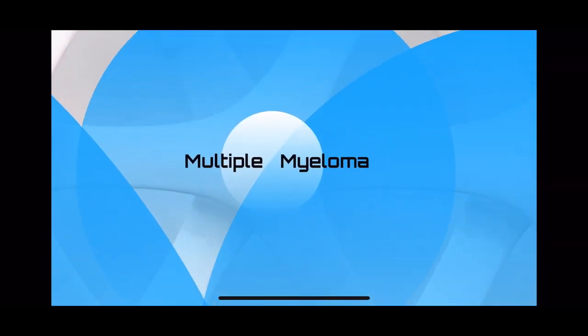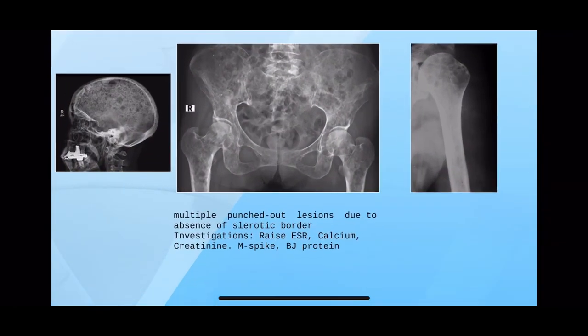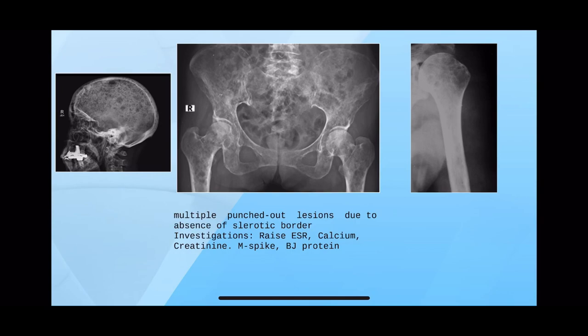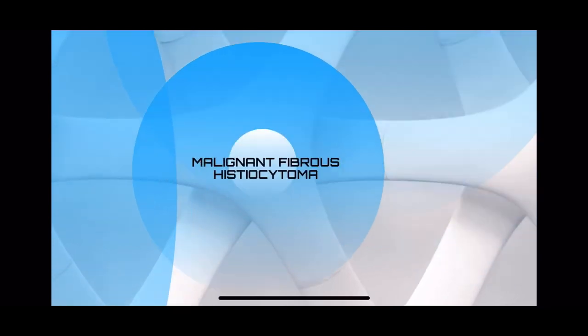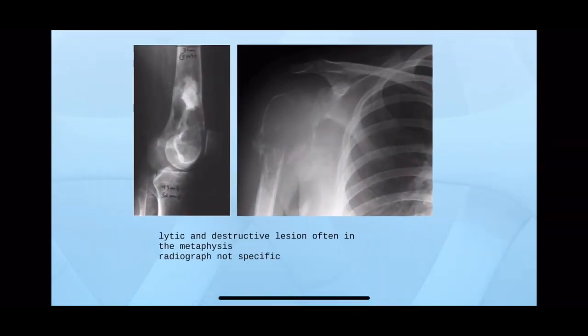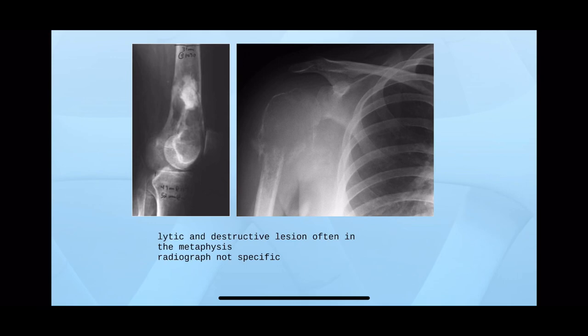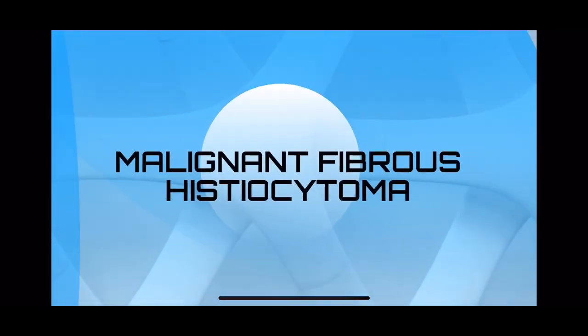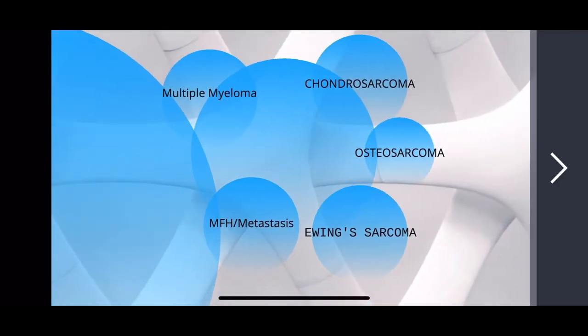Multiple myeloma is seen in patients above 40 years of age generally. As seen in the skull, there are multiple punched-out lesions. ESR and calcium are raised, meaning you have to check blood investigations and urine Bence Jones proteins for a final diagnosis. Multiple punched-out lesions are very typical of multiple myeloma. It can also be malignant fibrous histiocytoma, where X-ray features are not specific — so mostly you would not be asked about this as a last differential.